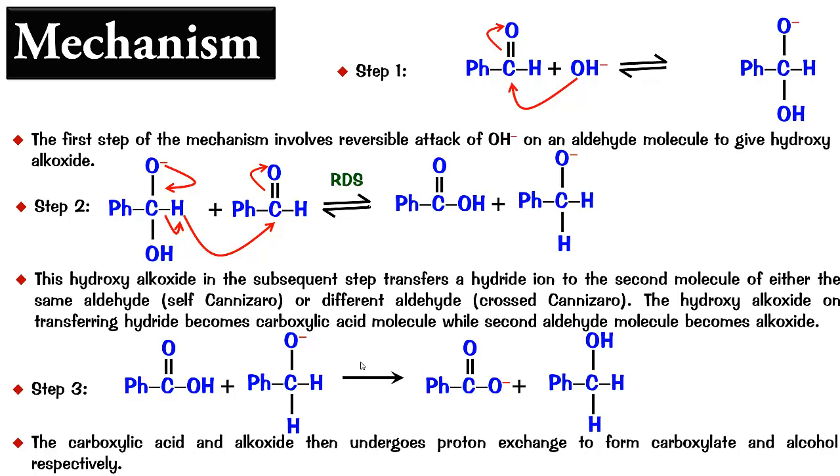Now what we essentially need to understand in this particular mechanism is the molecule on which the hydroxide has attacked. That is the molecule which becomes the hydroxy alkoxide and that is the molecule which is going to become carboxylic acid and that is the molecule which is going to become a carboxylate ion. So the one on whom hydroxide attacks first becomes carboxylate and the other one becomes a benzyl alcohol in this case or an alcohol in this case. Therefore this is the basic general mechanism of a Cannizzaro reaction.